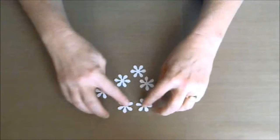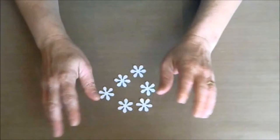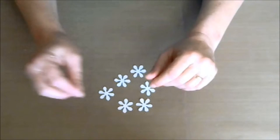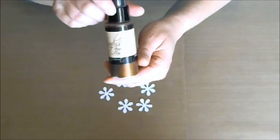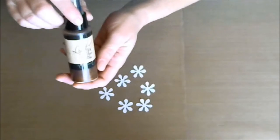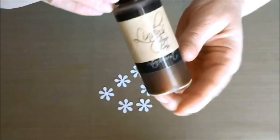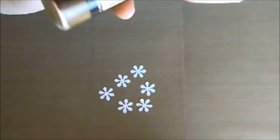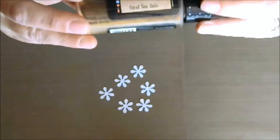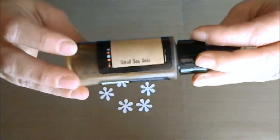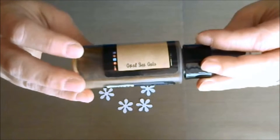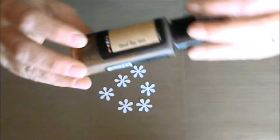So what we're going to do is spray these flowers, and we're going to use our Lindy's Stamp Gang. This color for the flowers is Opal Sea Oats, and I'll use that for the flower petals.